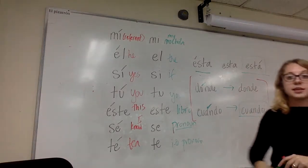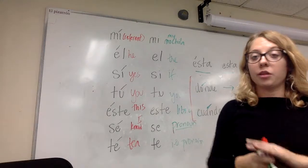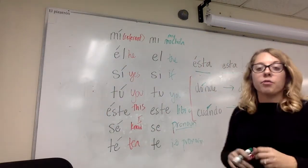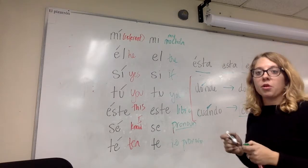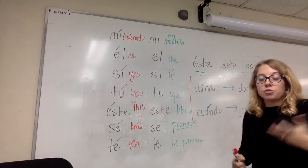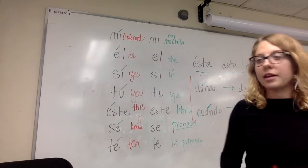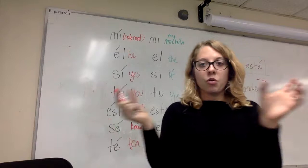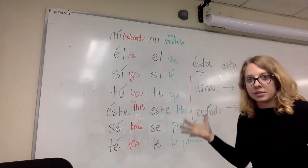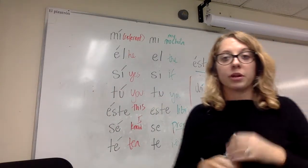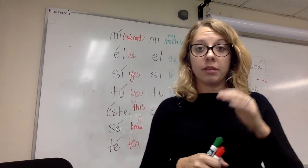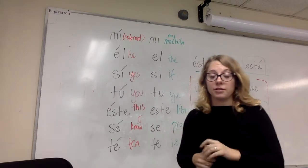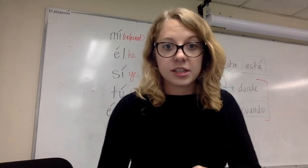Similarly with 'donde' — I can ask the question 'donde está el perro?' with an accent, but I could also say 'estoy en la clase donde aprendo mucho' — 'I'm in the class where I learn a lot' — using it as a complementizer to coordinate two structures together, without an accent. In a nutshell, that's what we've learned about accentuation with words: sometimes the same word appears with or without an accent, and the accent makes it completely different in meaning. Hopefully that helps you with your exercises today.